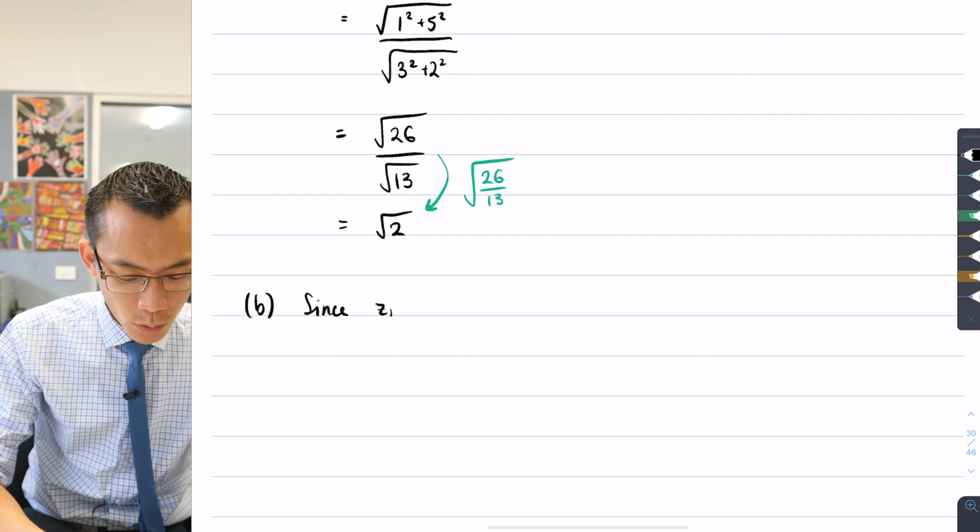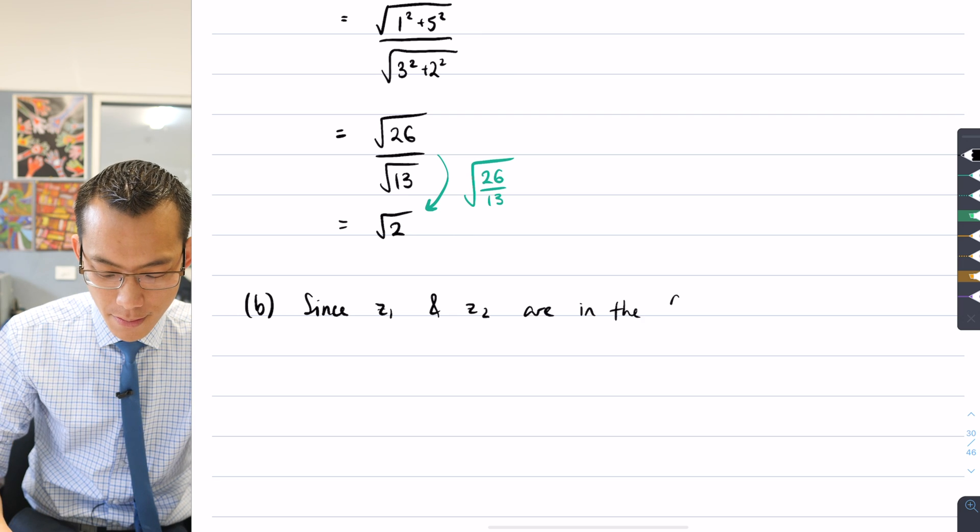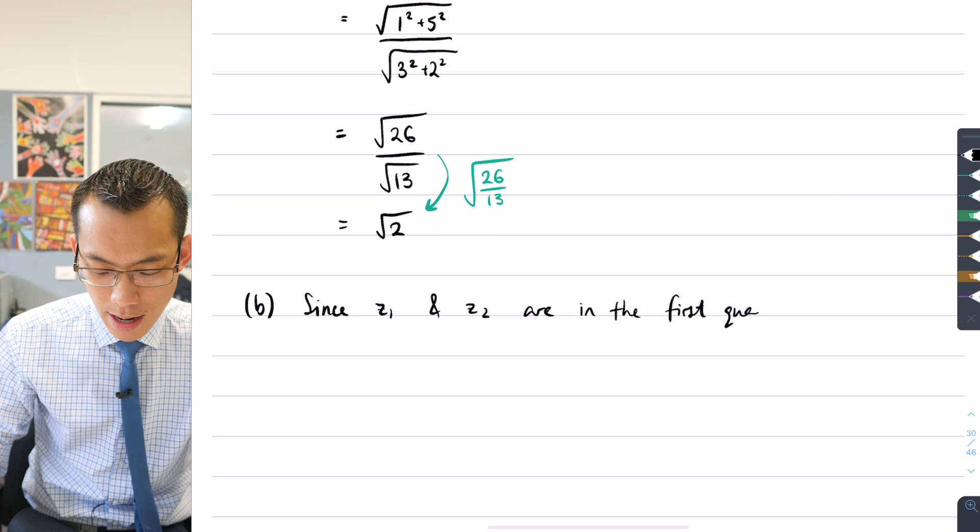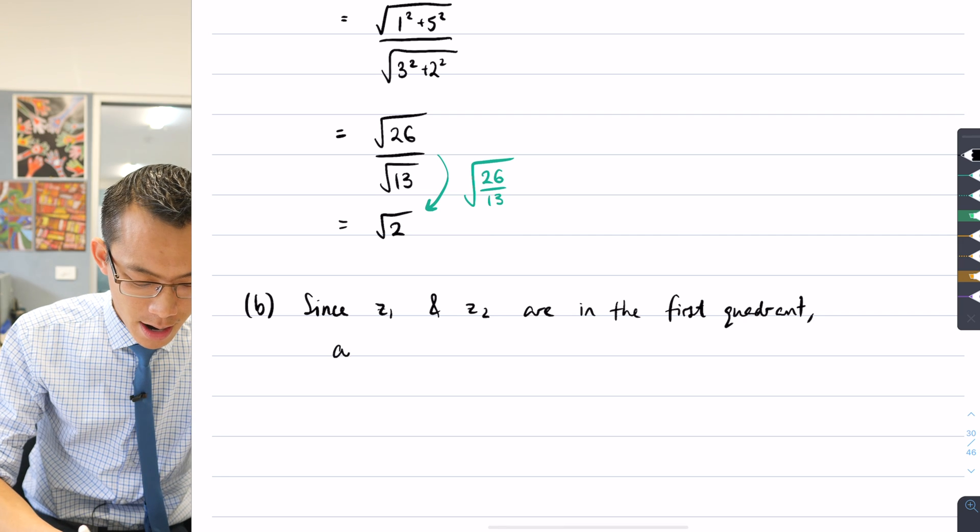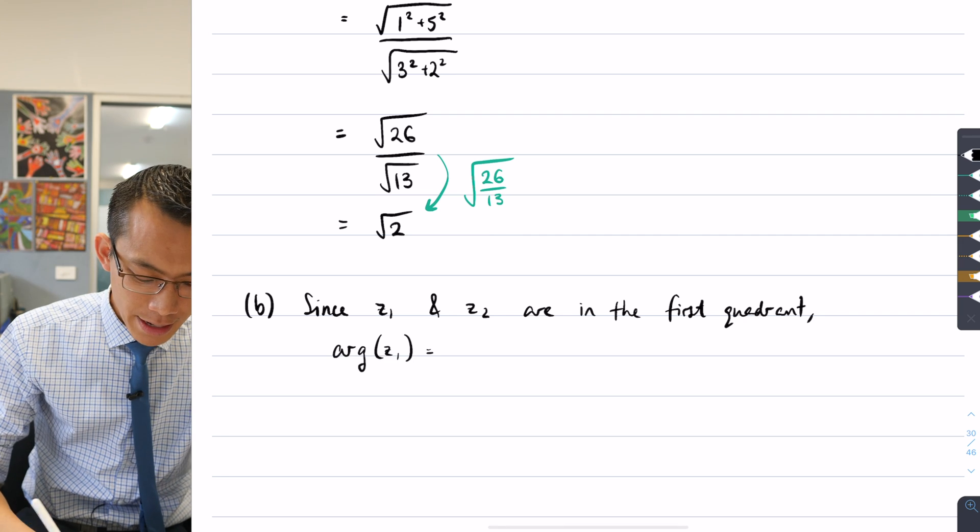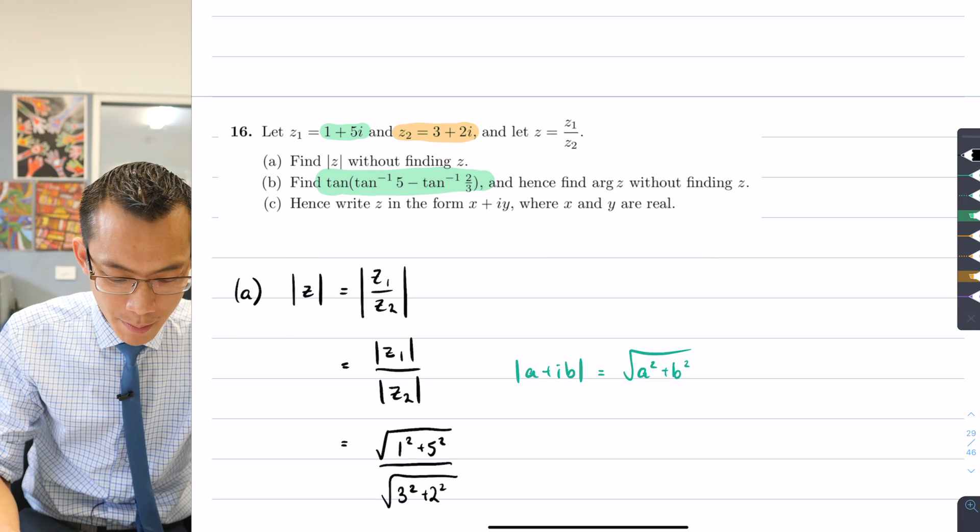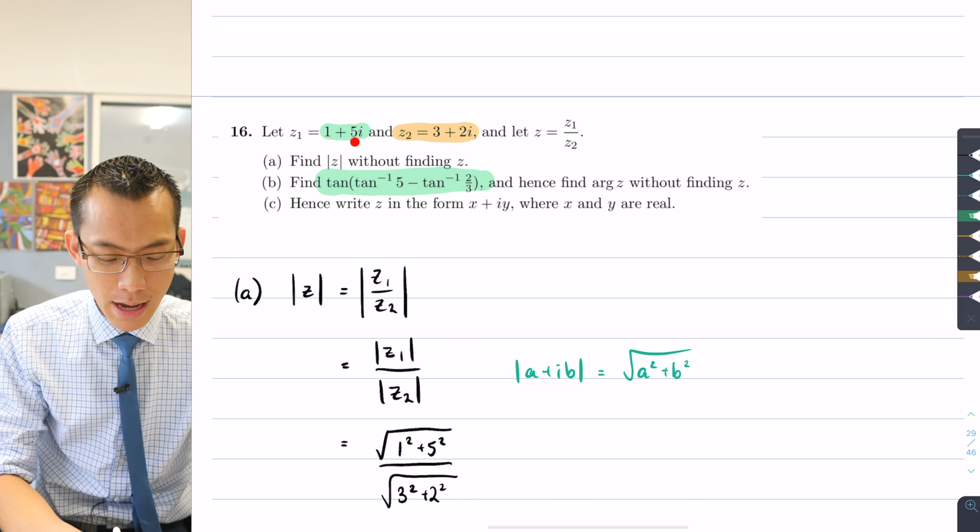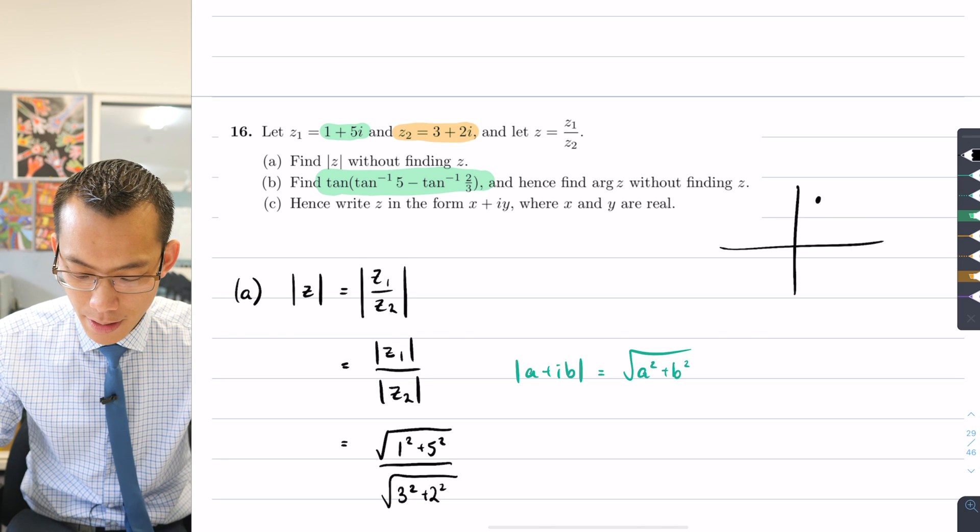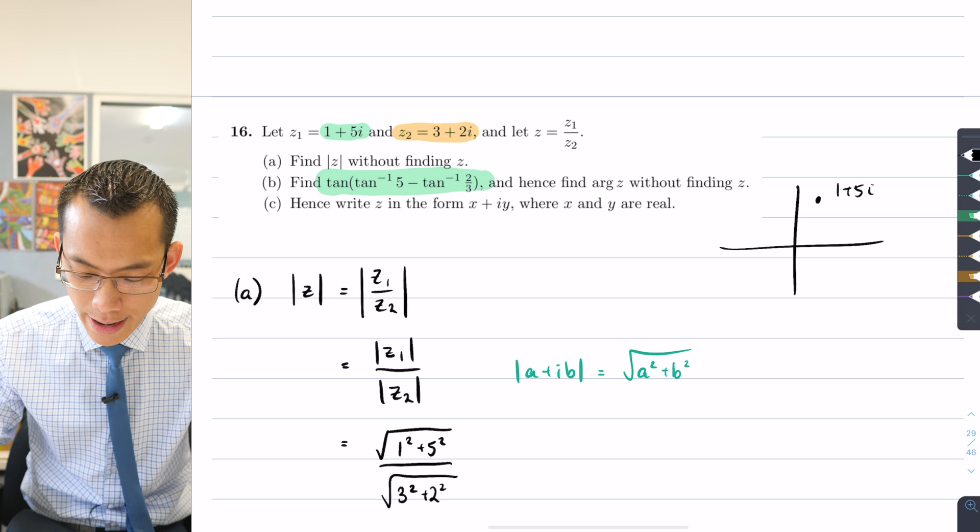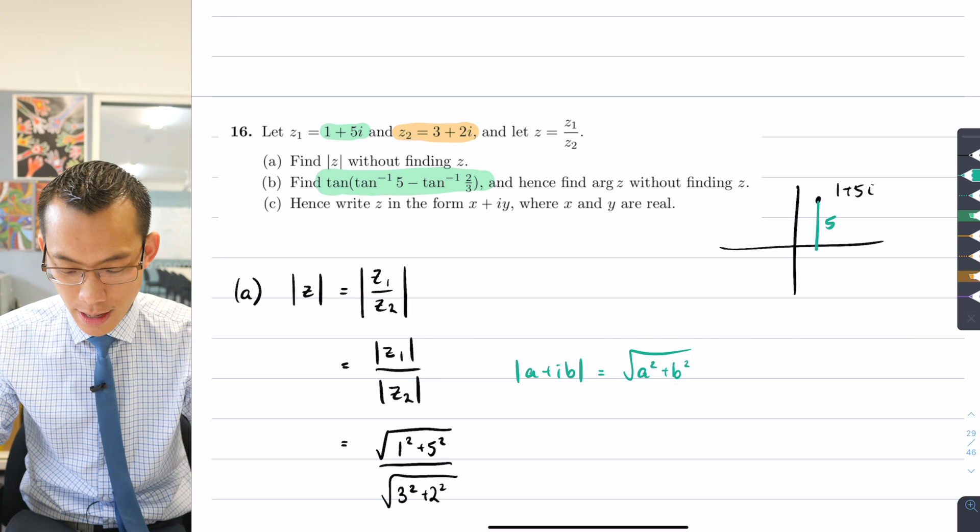I can state what their arguments are directly from tan inverse. I can say arg of z1 is going to be equal to tan inverse of, and from looking at this number it's going to be the y on the x—this is the opposite and this is the adjacent. If I had 1 plus 5i, it would be somewhere like that, so when I put in my 5 there, that's the opposite side to the angle that I'm interested in, and here is my 1 over here in my right angle triangle.